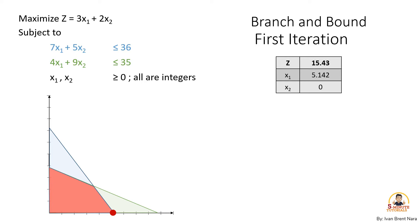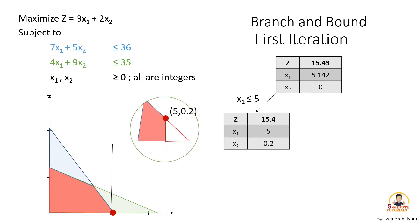For the first iteration, branch the problem by selecting an integer value for x1. On the left, we have x1 less than or equal to 5. The boundary of the graph will be adjusted or moved inside. The new values of the variables are x1 equals 5 and x2 equals 0.2. And on the right, we have x1 greater than or equal to 6. Graphing x1 greater than or equal to 6, we found out that it does not satisfy our first constraint, or it goes beyond the red space. Therefore, at x1 greater than or equal to 6, the solution is infeasible. Because the solution at x1 less than or equal to 5 still does not satisfy the integer restriction, let's move to the second iteration.